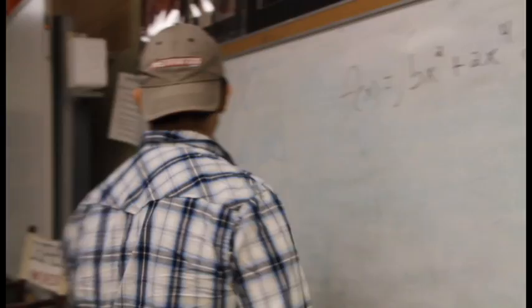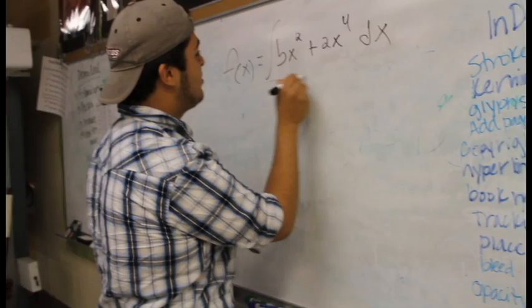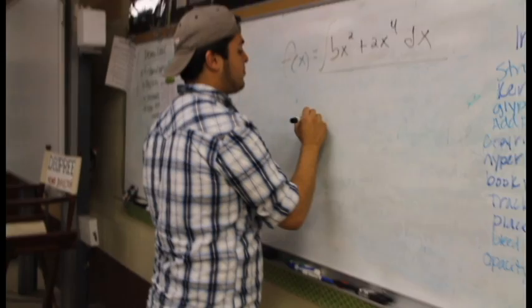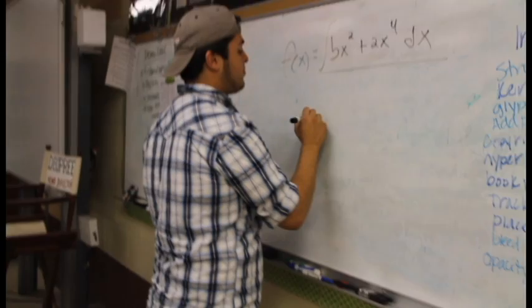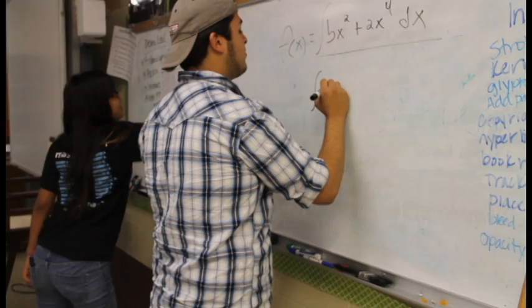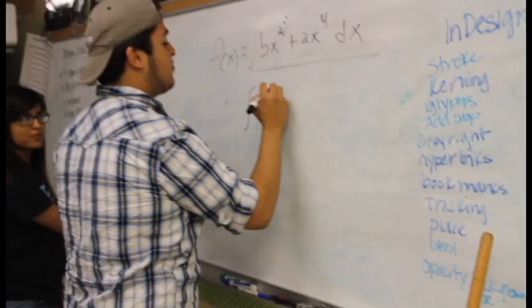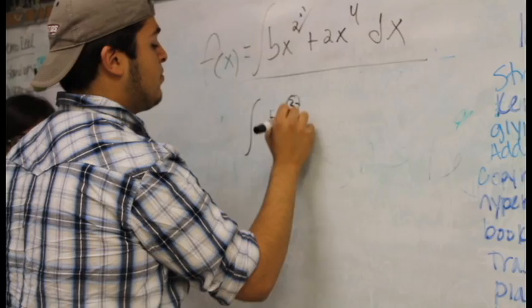Alright guys, next we're going to do an integral — real simple, really quick. The problem is f(x) = integral of (5x² + 2x⁴) dx. For the integral, you add 1 to the exponent: so 5x squared becomes 5x cubed, then divide by the new exponent — so 5x cubed divided by 3. Same for the next term: 2x to the 4th becomes 2x to the 5th, divided by 5. And that's a real simple integral.